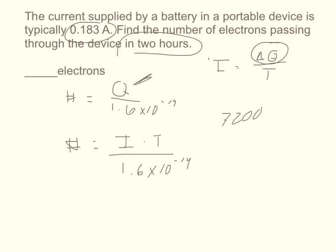So 7200 times 0.183, and then you divide that by 1.6 times 10 to the negative 19th. And you should get that the number of electrons is equal to 8.235 times 10 to the 20th.